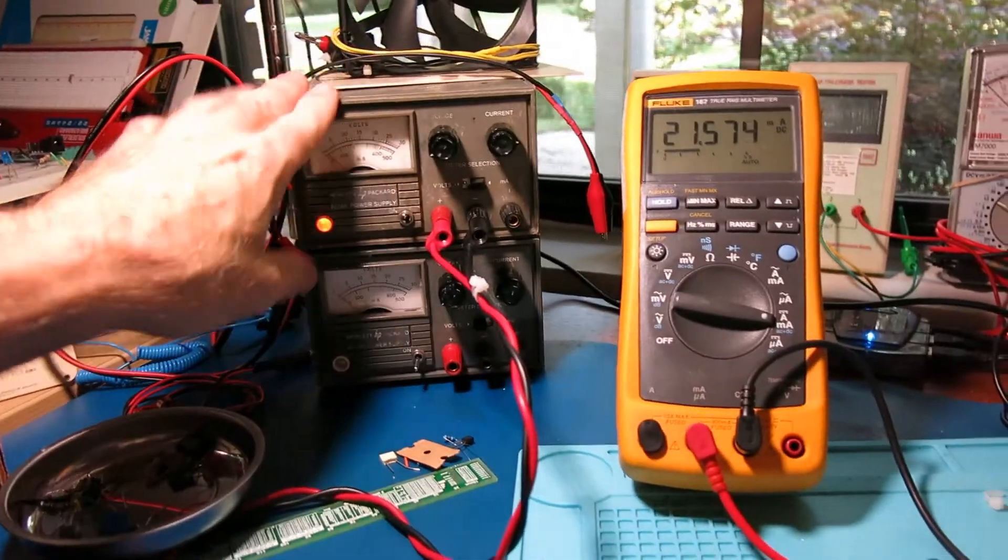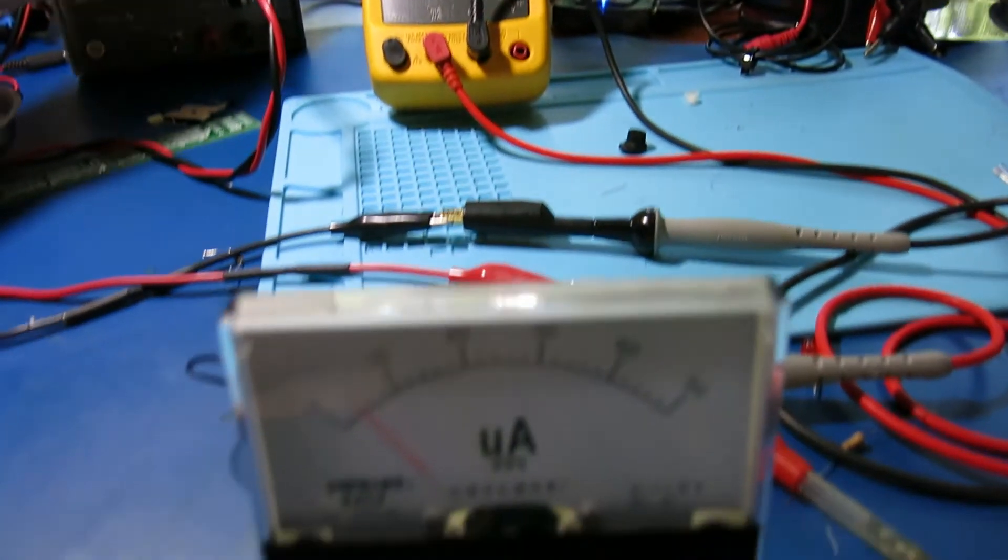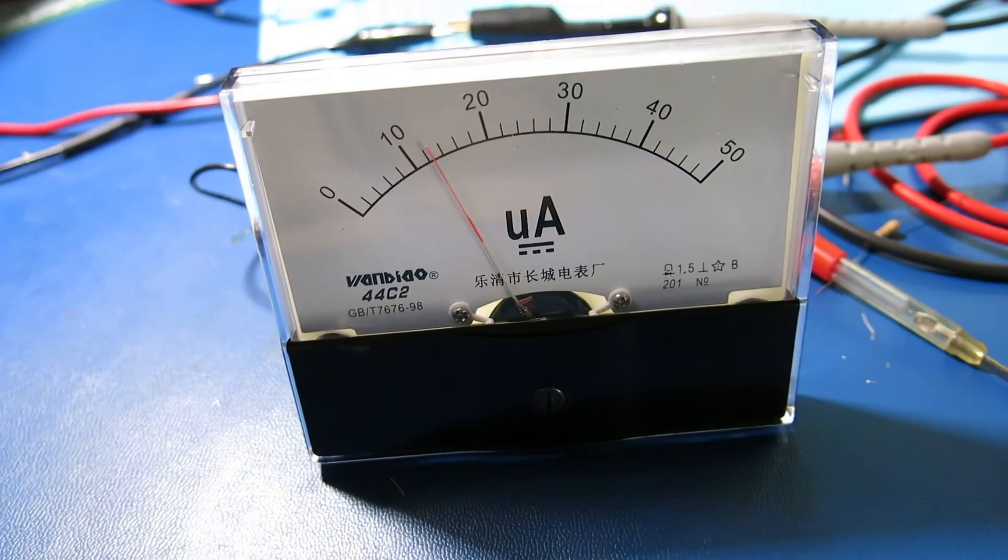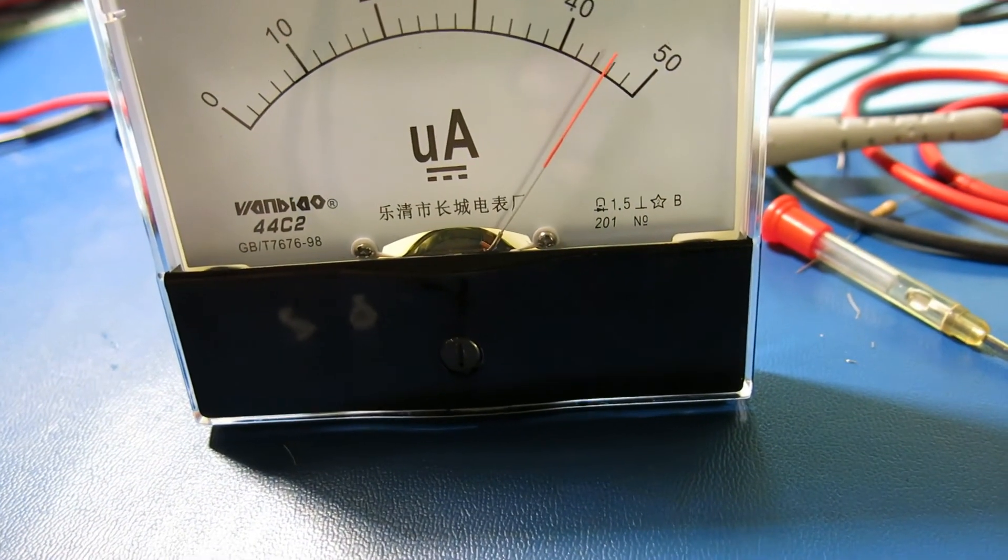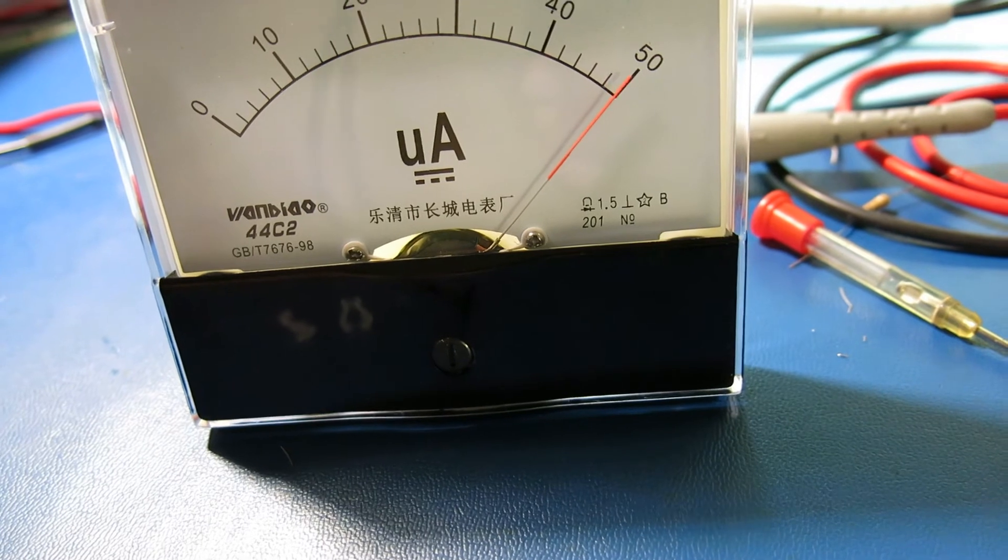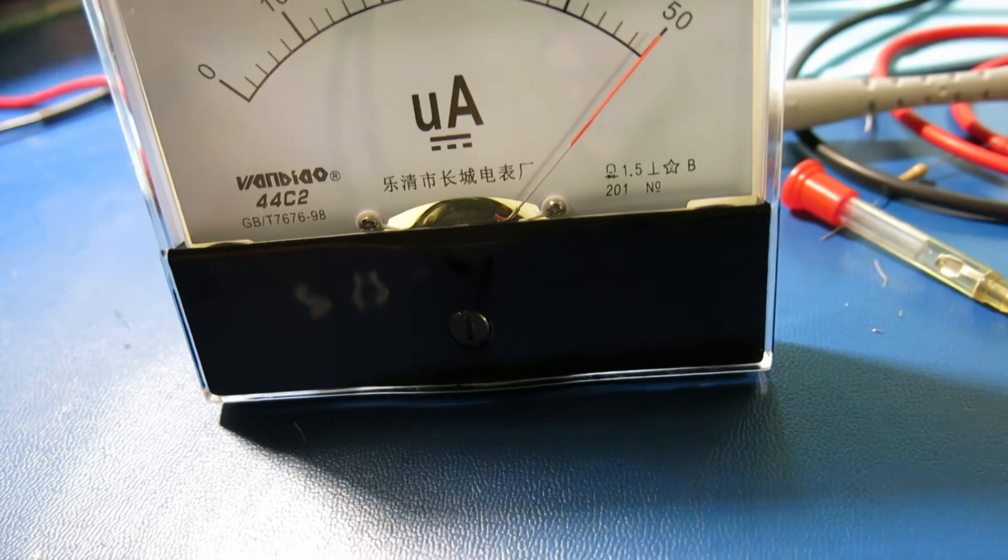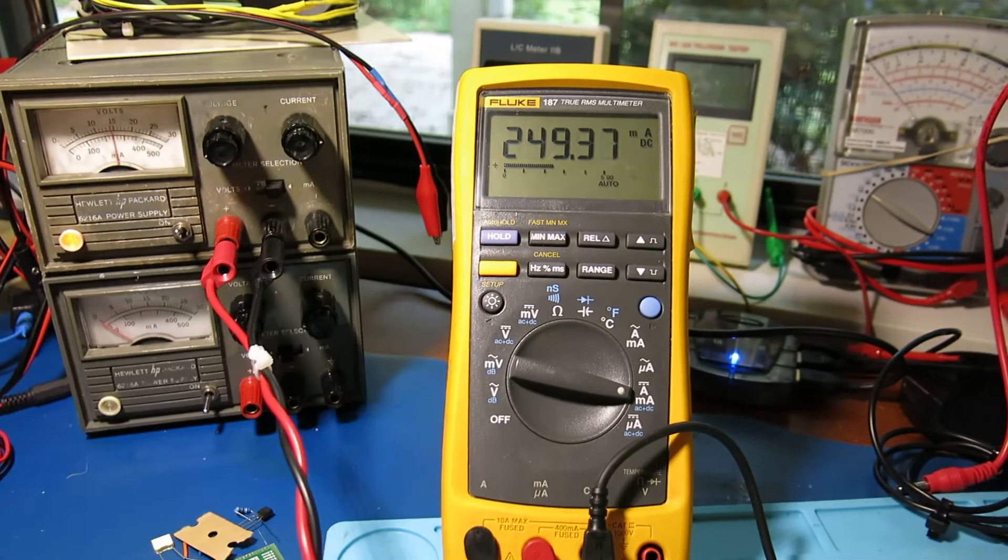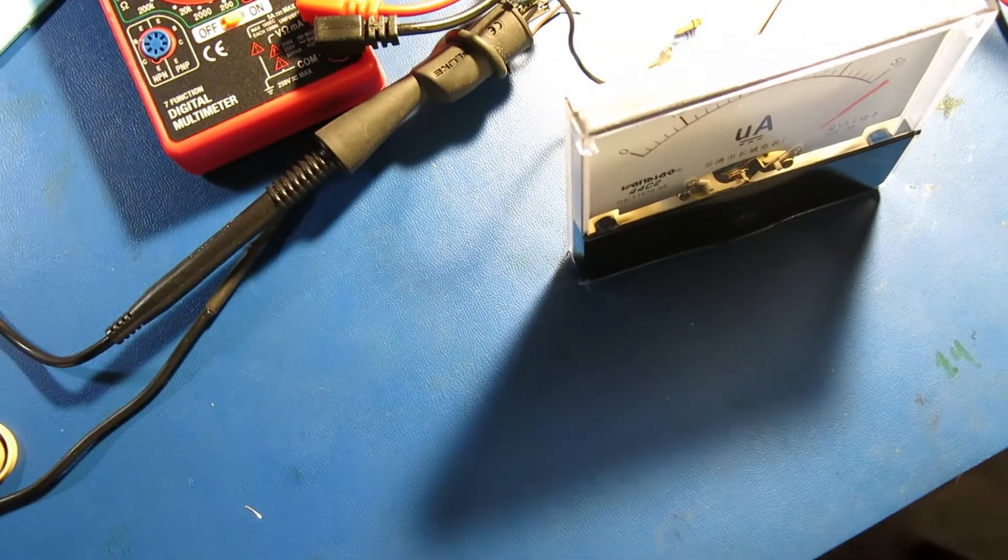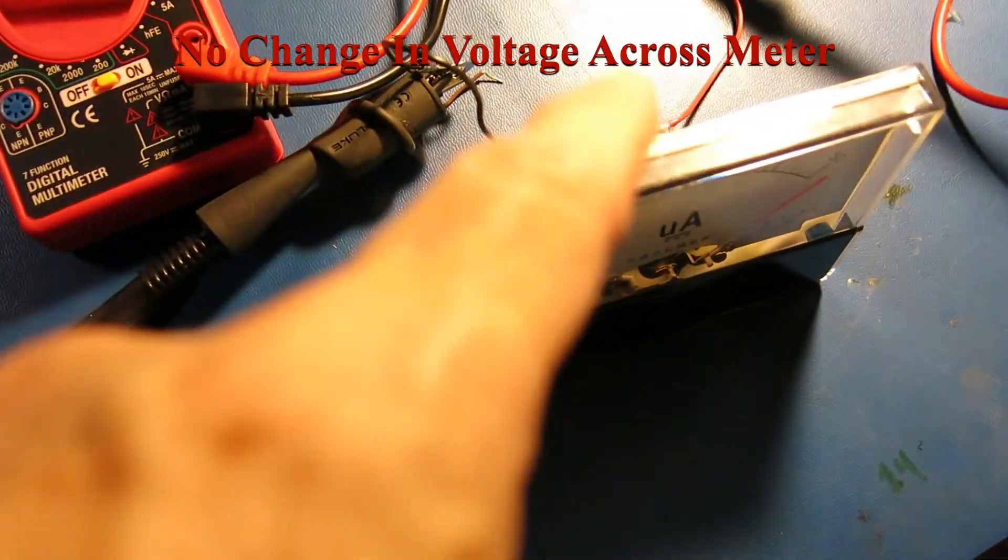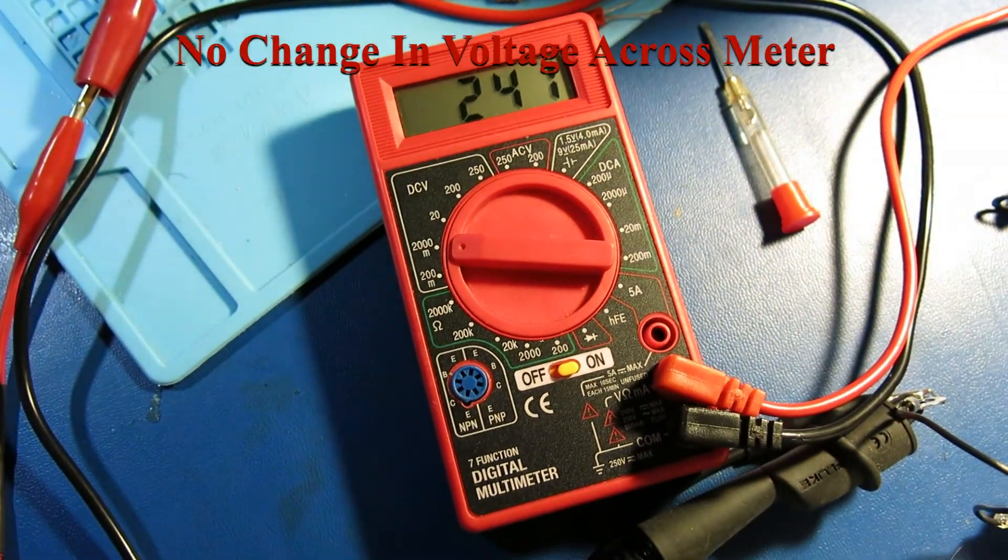I'm going to set my current limiting on my power supply to about 300 milliamps. And we'll slowly crank up the voltage here and see where we get full-scale reading. That looks about right. And the current is 249 milliamps. So that's not too bad. My burden voltage across the meter at full-scale deflection, 241 millivolts.